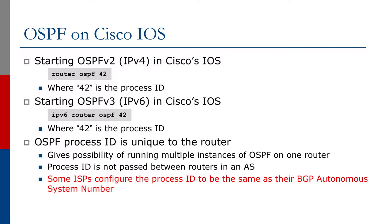To start OSPFv3, which is for IPv6 only, we do 'ipv6 router ospf' and then the process ID. Some network operators will configure the process ID to be the same as the BGP Autonomous System number, but any number will do.